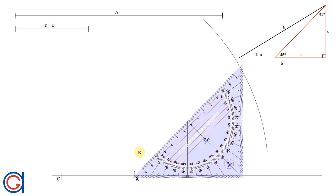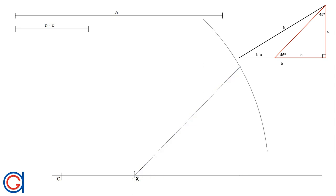So now we have to draw a ray from the point X which forms a 45 degree angle with the horizontal line, until it cuts the previously drawn arc at a new point or vertex which we will call B.